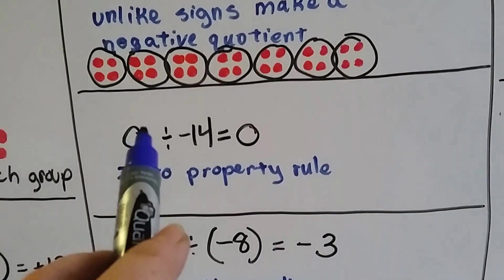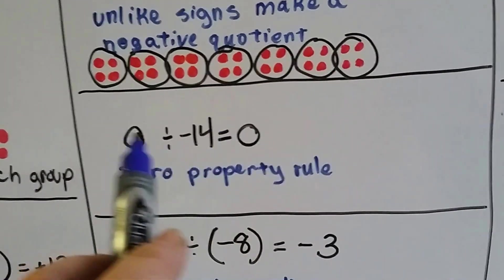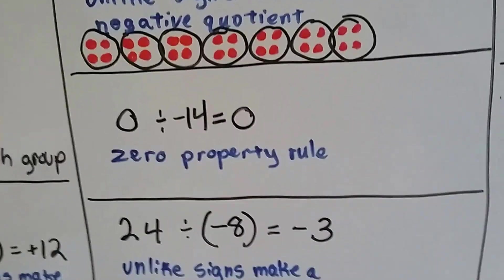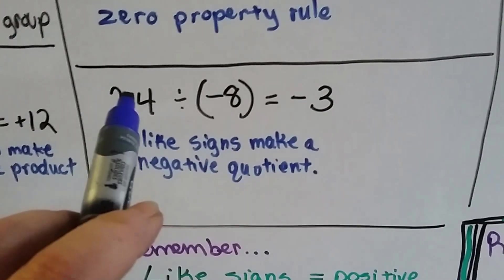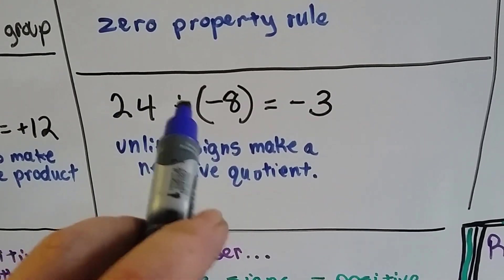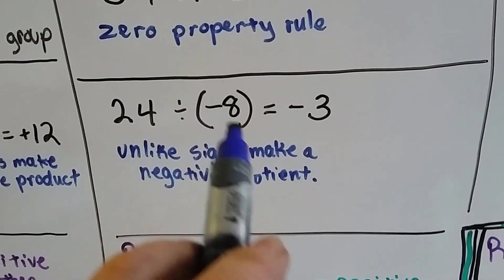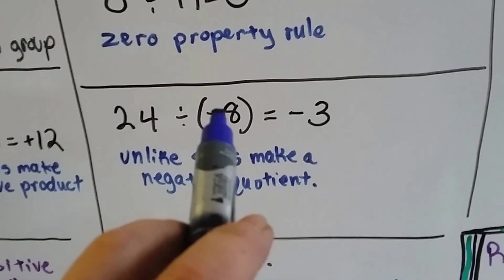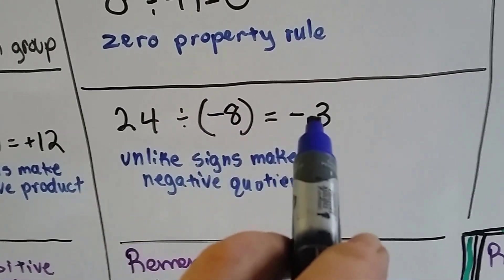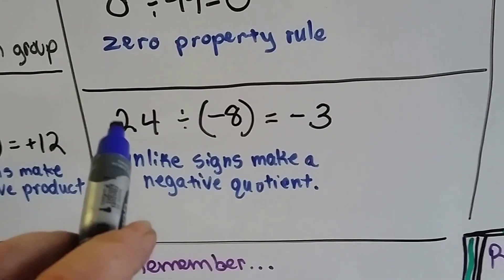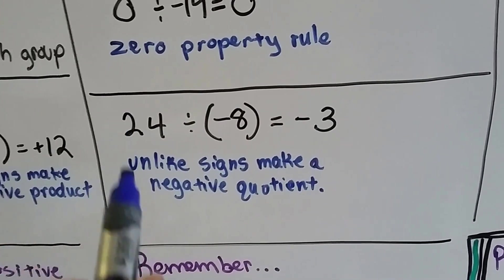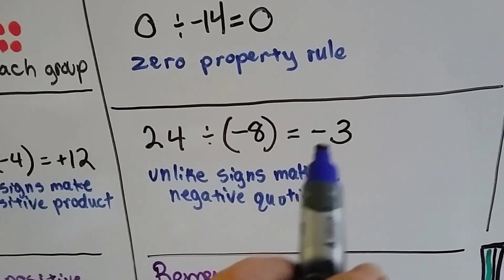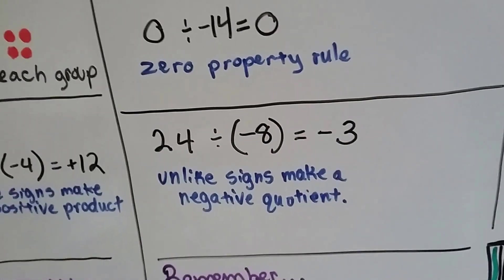That's the zero property rule — you can't divide 0 into anything. If I have a positive 24 and I divide it by a negative 8, I'm going to have a negative 3 because negative 8 times negative 3 equals positive 24. These are unlike signs — positive and negative — so it's going to give me a negative.